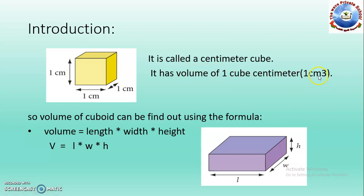So volume will become cubic cm, which can be written as cm³. The volume of a cuboid can be found using the formula: volume is equal to length multiplied by width multiplied by height.